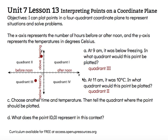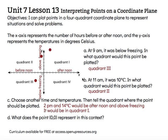For letter C, it says choose another time and temperature, then tell the quadrant where the point should be plotted. I'm going to choose 2 p.m. and 14 degrees Celsius. So 2 p.m. is after noon, so I'm going to go to the right. And 14 degrees Celsius is above freezing, so I'm going to go up — to the right and up. This would put me in quadrant 1.